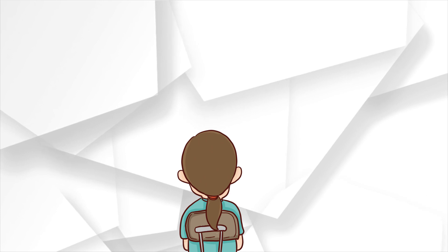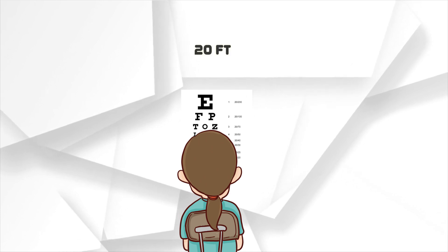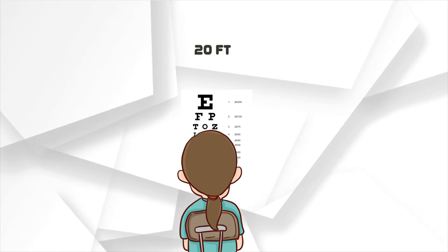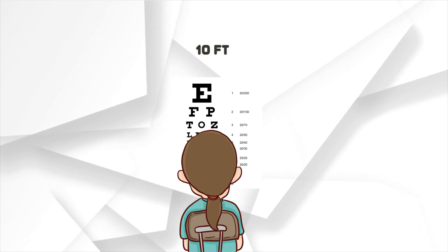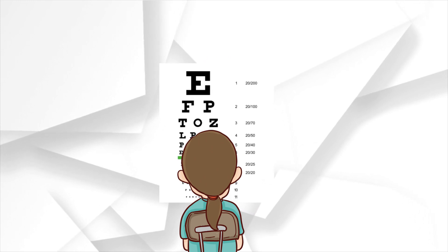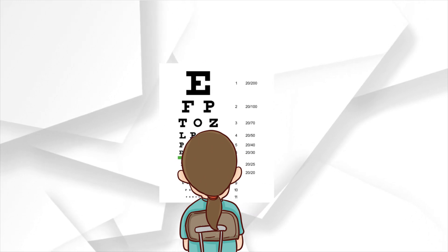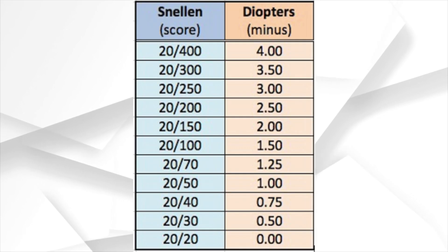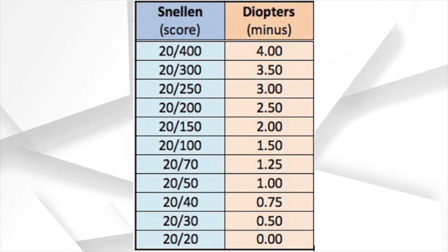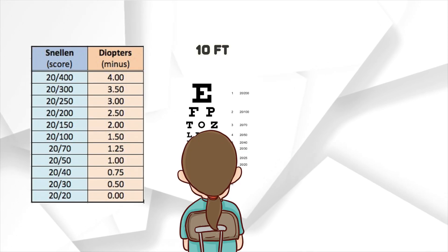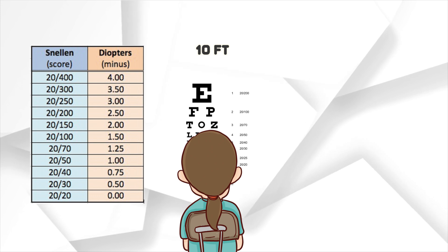Testing distance starts at 20 feet, but if the biggest letter is not visible, move the test chart to 10 feet. If it's still not visible, move the test chart by half the distance until the patient can see the biggest letter. The chart distance can be our basis for what dioptric power to use, based on the patient's best visual acuity. For a low vision patient that needs to be 10 feet or closer to the chart, we give a higher starting lens.